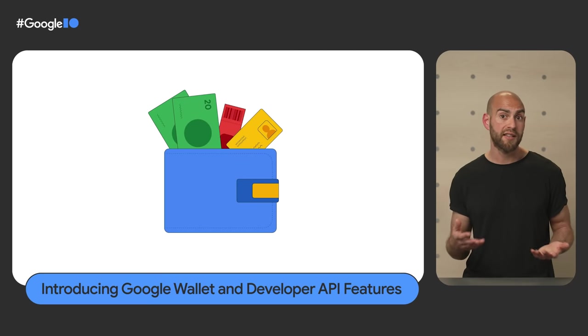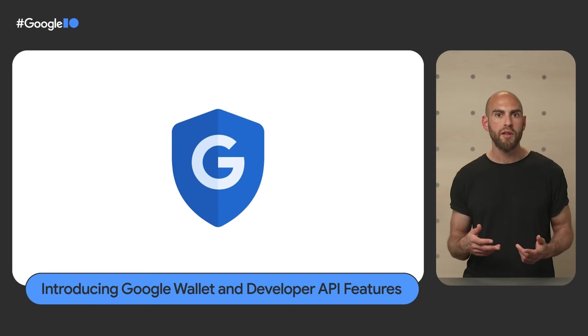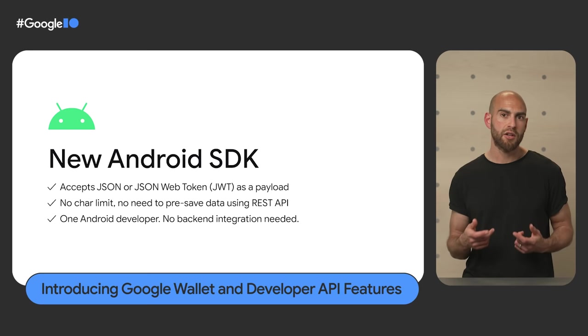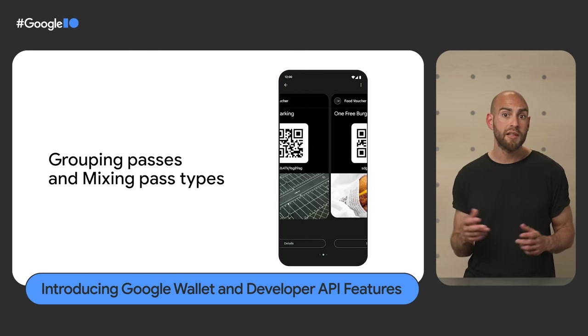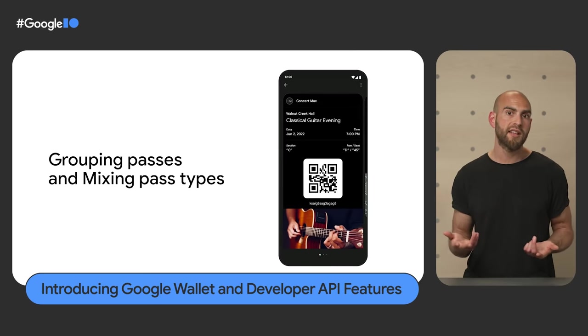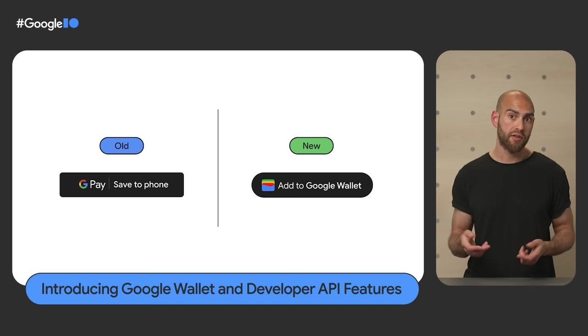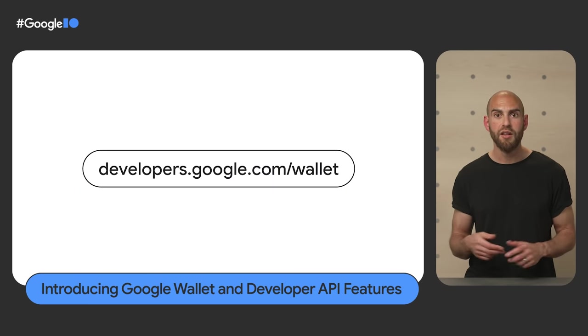The new Google Wallet gives you fast, secure access to everyday essentials — event tickets, boarding passes, vaccine cards, and more. We're evolving the previous Google Pay Passes API, now called the Google Wallet API, launching a new Android SDK that lets you save passes directly from your app without back-end integration. We continue to support all existing pass types and are adding a new generic card for memberships, reservations, or vouchers, plus the ability to group multiple passes together. For full details, watch the session, read the docs at developers.google.com/wallet, or take the new codelab.